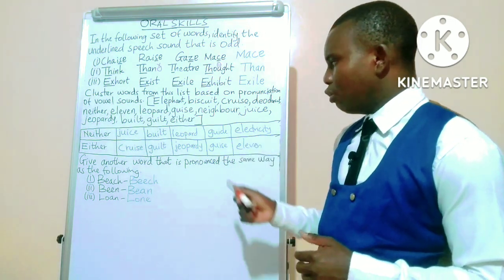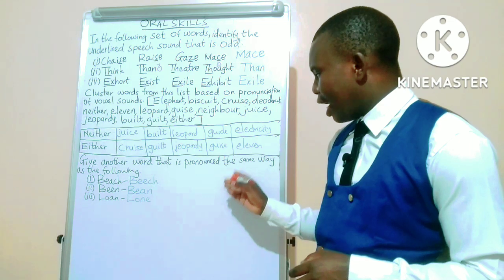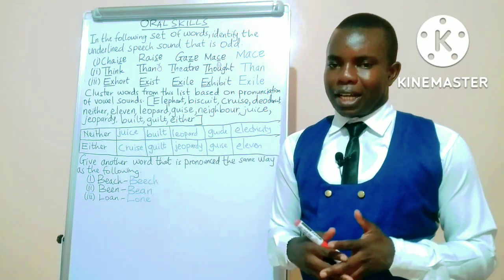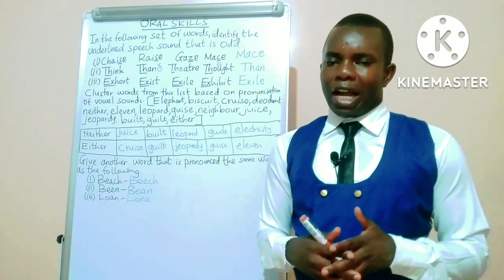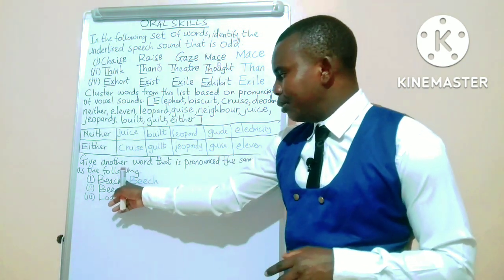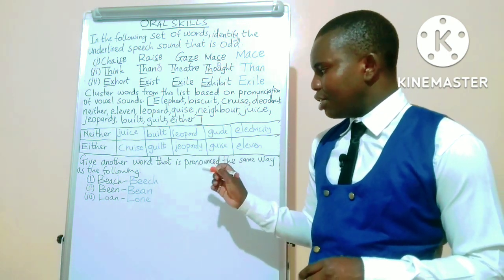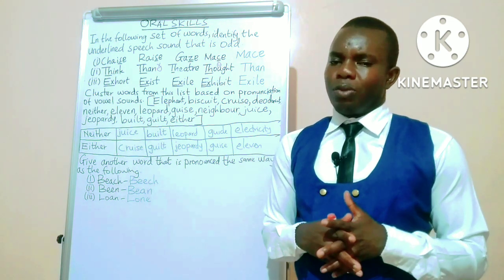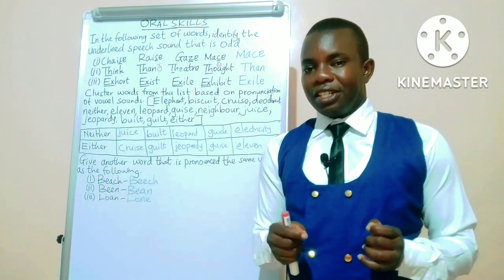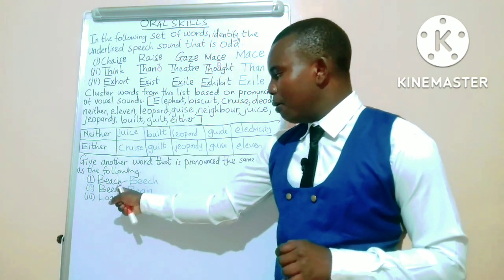The last question expects us to provide homophones for the words there. That is the beach with the spelling B-E-A-C-H. A word that is pronounced the same as that is beech, but in this case with double E, B-E-E-C-H.